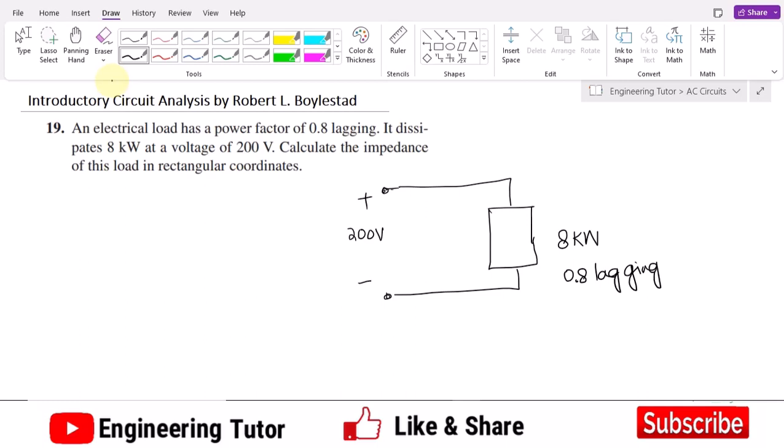And the power factor associated with this load is 0.8 lagging. What do we have to find out? We have to find out this Z naught. I have to find out this Z naught, and first of all let me also find out the current which is flowing from this source.